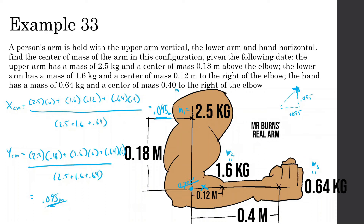Using the Pythagorean theorem from the zero point, the distance is the square root of (0.095 squared plus 0.095 squared), which gives 0.13 meters at 45 degrees. So the center of mass is at this point — that's how you do it in two dimensions.